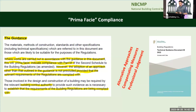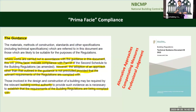The adoption of an approach other than that outlined in the guidance is not precluded, provided that the relevant requirements of the regulations are complied with. Sometimes we have to use alternative approaches, professional judgment, and compensatory features — especially to make existing buildings work. Ultimately, the building control authority has to be in a position where they can establish that the requirements of the building regulations are being complied with. That's the idea behind the DAC process — it's not a paperwork exercise.